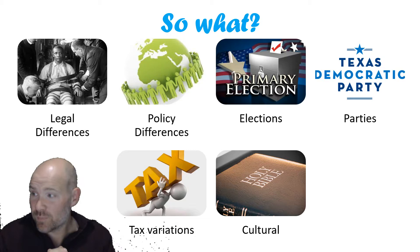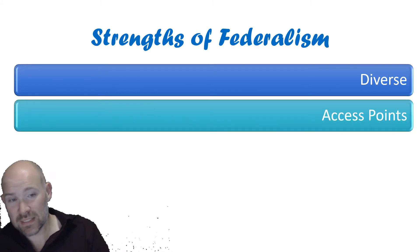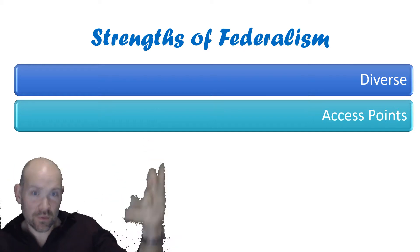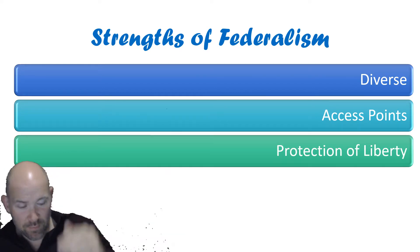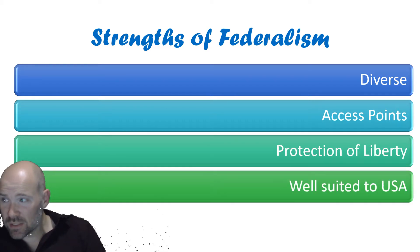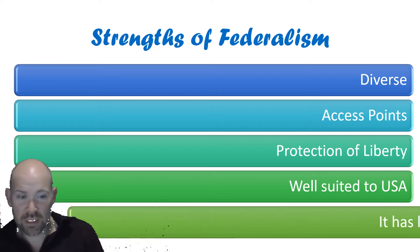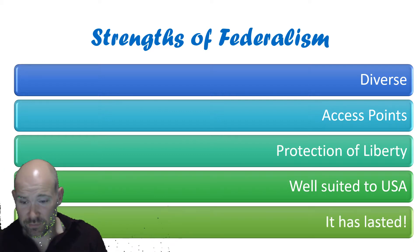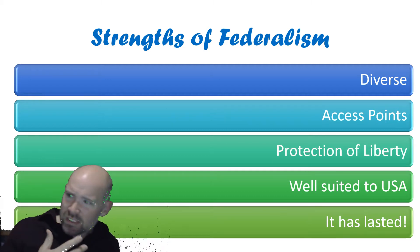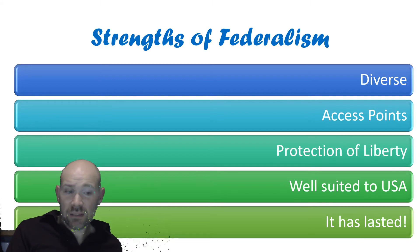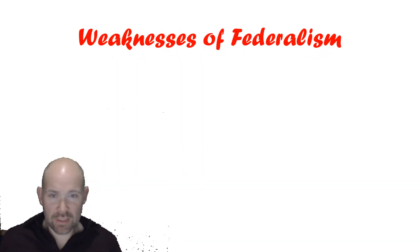Is federalism actually good? It allows diversity, provides more access points — local, state, and federal government — with lots of places to take problems or cast votes. It protects liberty by having different representatives looking out for you. It's well suited to the vast size of the USA. Unlike the original confederacy, which fell apart, the federal system has lasted and perhaps allowed America to become a huge power by binding the states together but not too tightly.